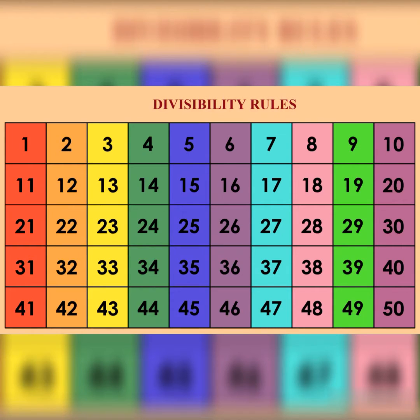Divisibility by 4 – a number is divisible by 4 if the number formed by its last two digits is divisible by 4.